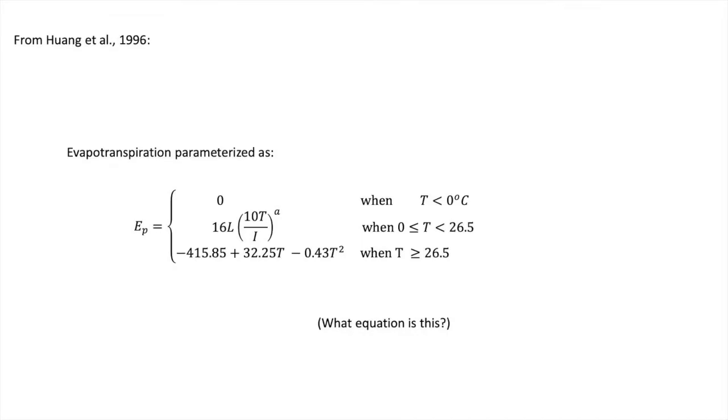Evapotranspiration in the original paper here, 1996, was parameterized as, excuse me, potential evapotranspiration I should say, was parameterized solely as a function of temperature. And if you remember from last time, hopefully you will recognize that this is the Thornthwaite equation and generally should be avoided when possible because it's too simple and it overemphasizes the role that temperature plays in driving evapotranspiration.